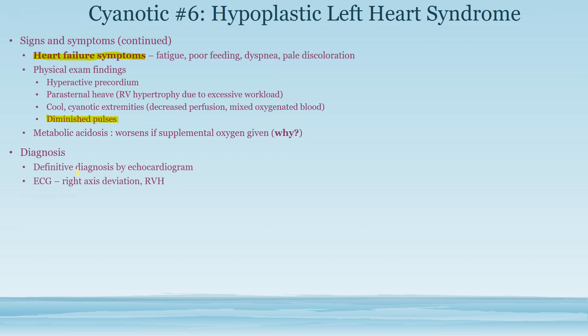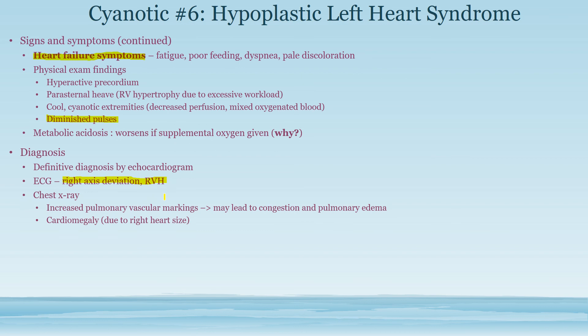For diagnosis, the definitive test is always echocardiography. EKG will show right axis deviation and right ventricular hypertrophy because the right heart is supplying the entire body including the lungs. Chest X-ray will show increased pulmonary vascular markings due to more blood going through the pulmonary vasculature, including pulmonary edema and congestion. You also get cardiomegaly because the right heart is overwhelmed with pressure and volume.